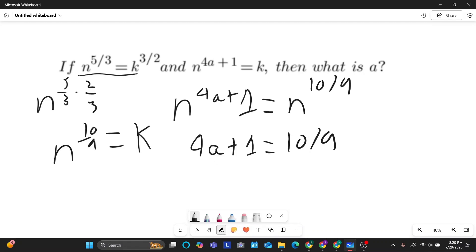I'm going to subtract 1 from 10 over 9. So 1 in terms of 9 is going to be 9 over 9. So 4a equals 10 over 9 minus 9 over 9. That's just 4a equals 1 over 9. And I want to get rid of this 4 right here. The way I'm going to do that is I'm going to multiply everything by 1 over 4. And so that would just give me a equals 1/9 times 1/4, which is 1 over 36. And that's going to be your final answer. Thank you.